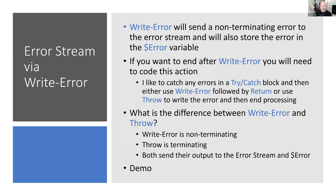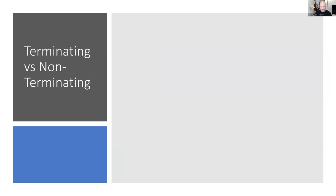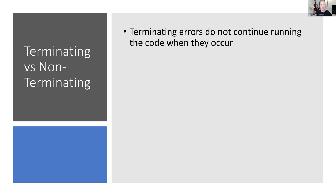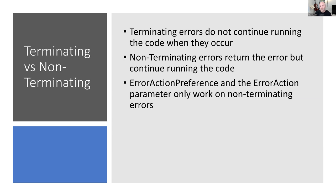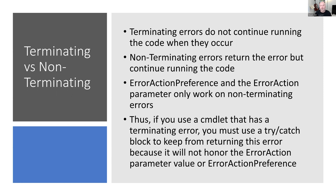Back to slides: terminating versus non-terminating. Terminating errors do not continue running the code. Non-terminating errors return the error but continue running the code. ErrorActionPreference and the ErrorAction parameter only work on non-terminating errors — that's important. If you're using a cmdlet that has a terminating error, you must use a try-catch block. Stephen's best practice: put everything you think might throw an error into a try-catch block.